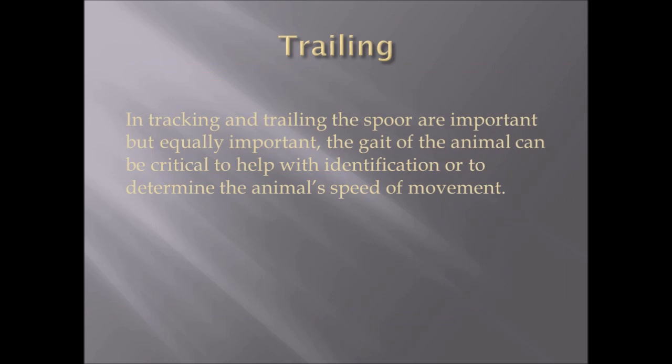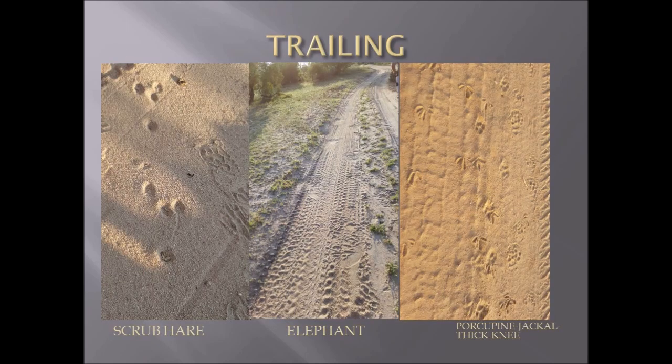Trailing in tracking is important, but equally important is the gait of the animal, which can be critical to help with identification or to determine the animal's speed of movement. Here we have several different kinds of trails. On the left-hand side, you have the trail of the scrub hare, which has a characteristic four-point grouping that forms a seven or L shape.